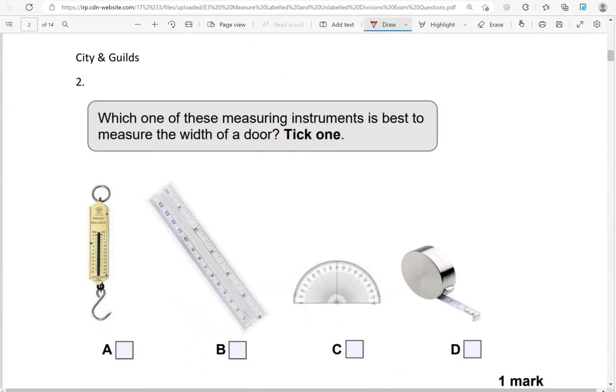Which one of these measuring instruments is best to measure the width of a door? Tick one. This is a scale to measure weight, and that's not the case. A ruler is really for very short lengths, not for measuring the width of a door. This is a protractor to measure angles, again not applicable. And this is a measuring tape. That's the right instrument to measure the width of a door.